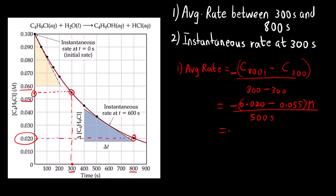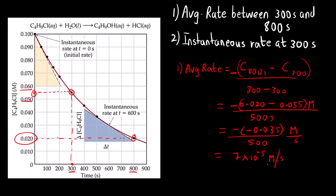Solving this: −(0.020 − 0.055) / 500 = −(−0.035) / 500. The unit is molar per second. This comes out to be 7 × 10⁻⁵ molar per second. This is how we calculate the average rate.